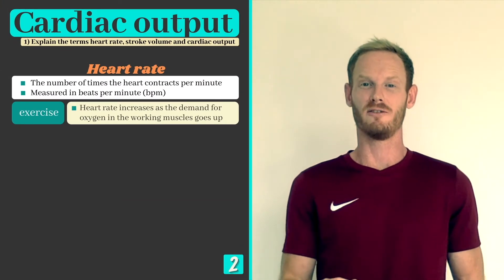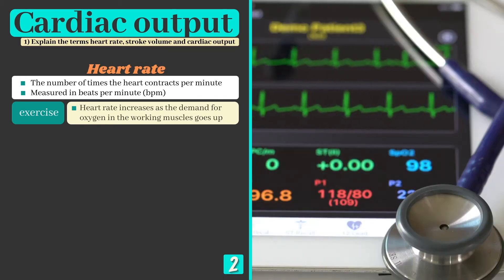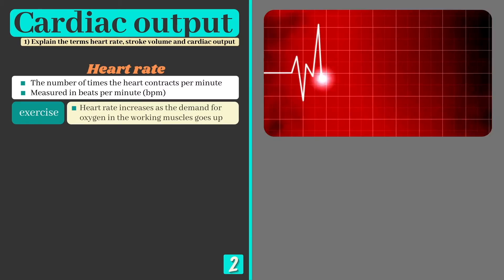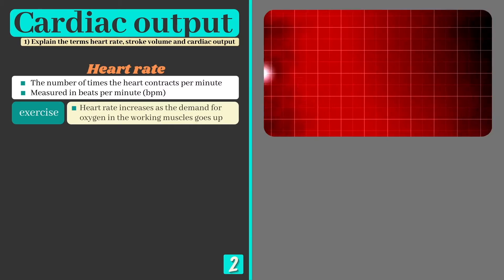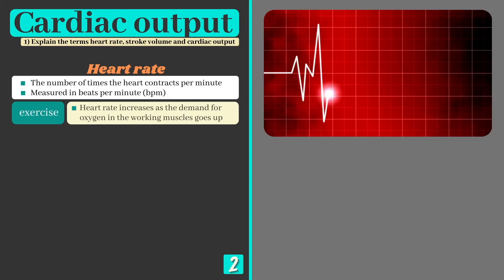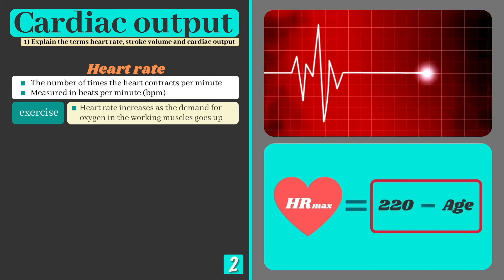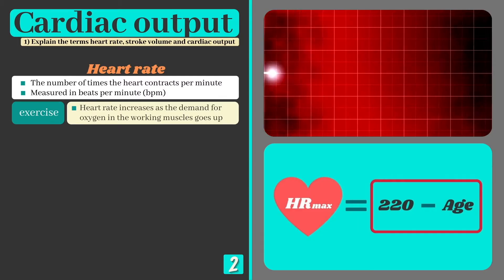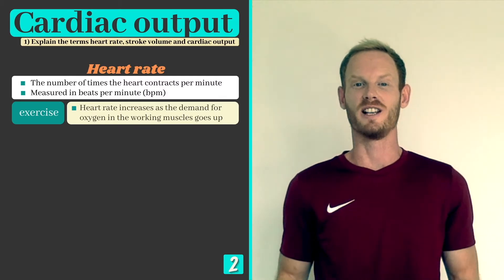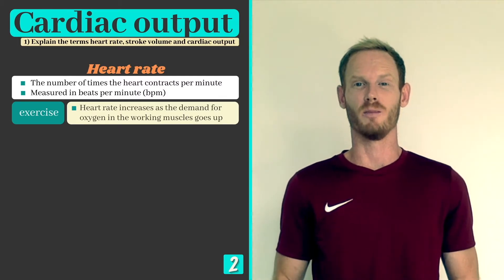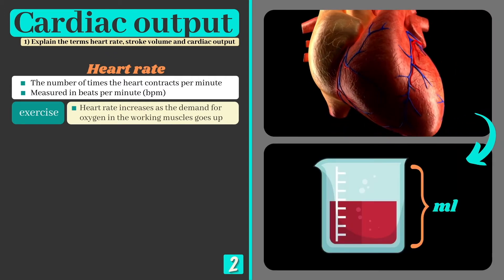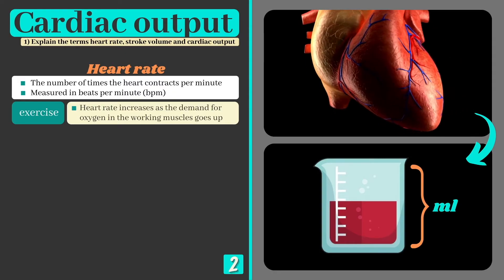Heart rate can be defined as the number of times the heart beats per minute, in beats per minute or BPM. Heart rate increases as we exercise as the demand for oxygen in the working muscles goes up, and it's possible to estimate your maximum heart rate by using the equation 220 minus your age. As heart rate increases, more blood is circulated around the body, but it's not the only factor involved, as the amount of blood that leaves the heart per beat also plays a major role.